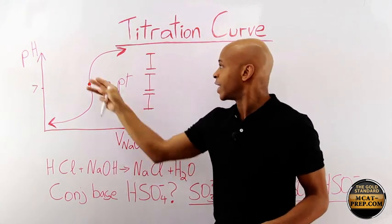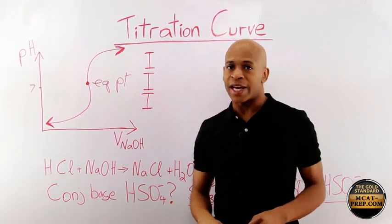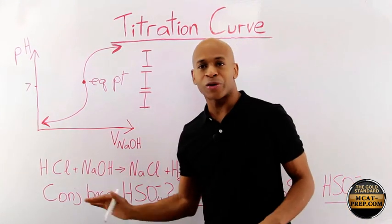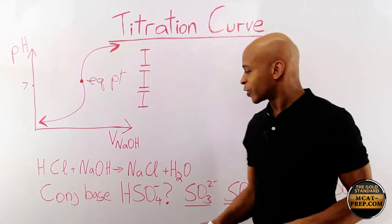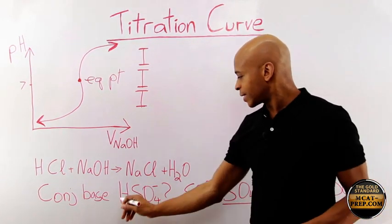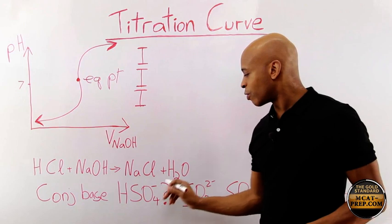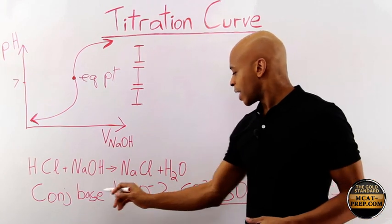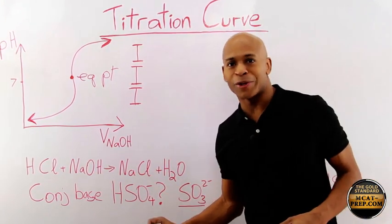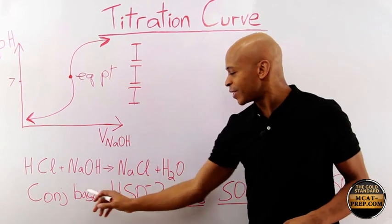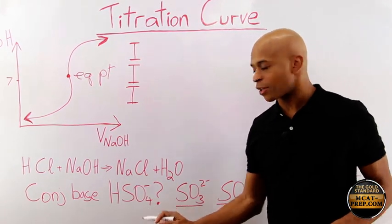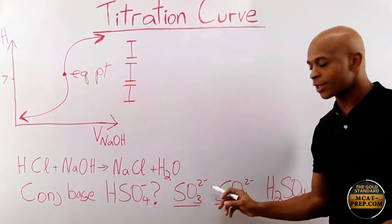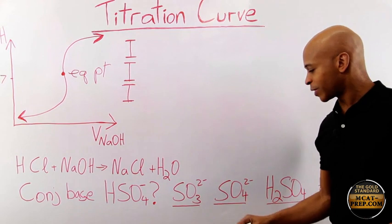Once you've neutralized all the H⁺, the OH⁻ takes over, and that part of the curve behaves like a strong base — which is what's left over. Now I want to make sure you're clear on conjugate acid-base pairs. Here's a question: given the substance HSO₄⁻, which of the following substances is its conjugate base? The options include SO₃²⁻, SO₃, SO₄²⁻, H₂SO₄, and hydrogen sulfite.